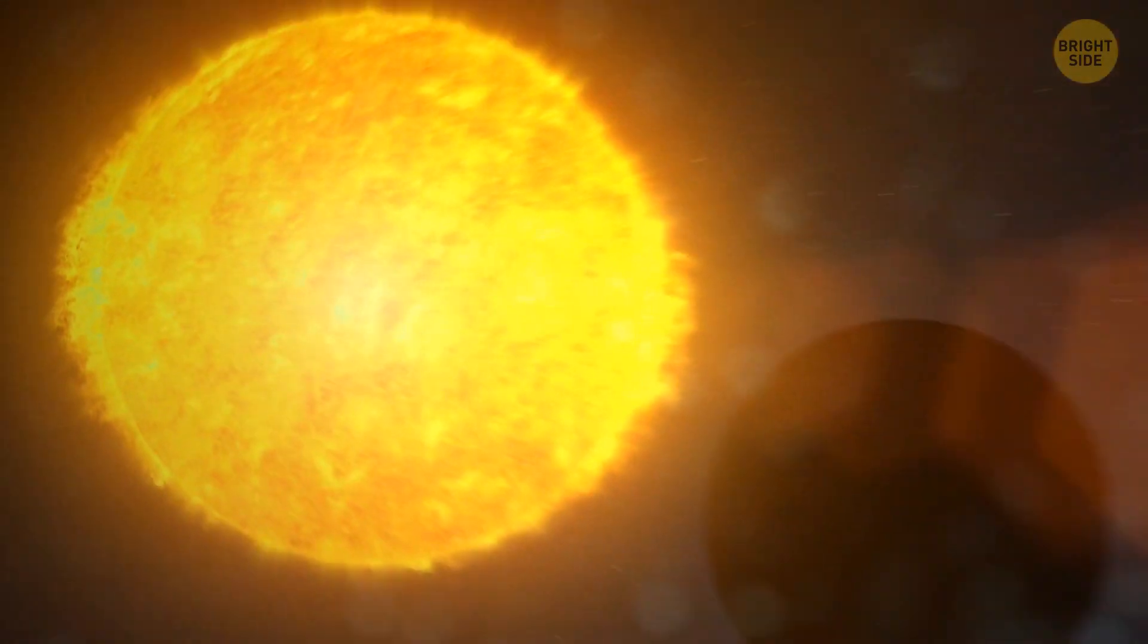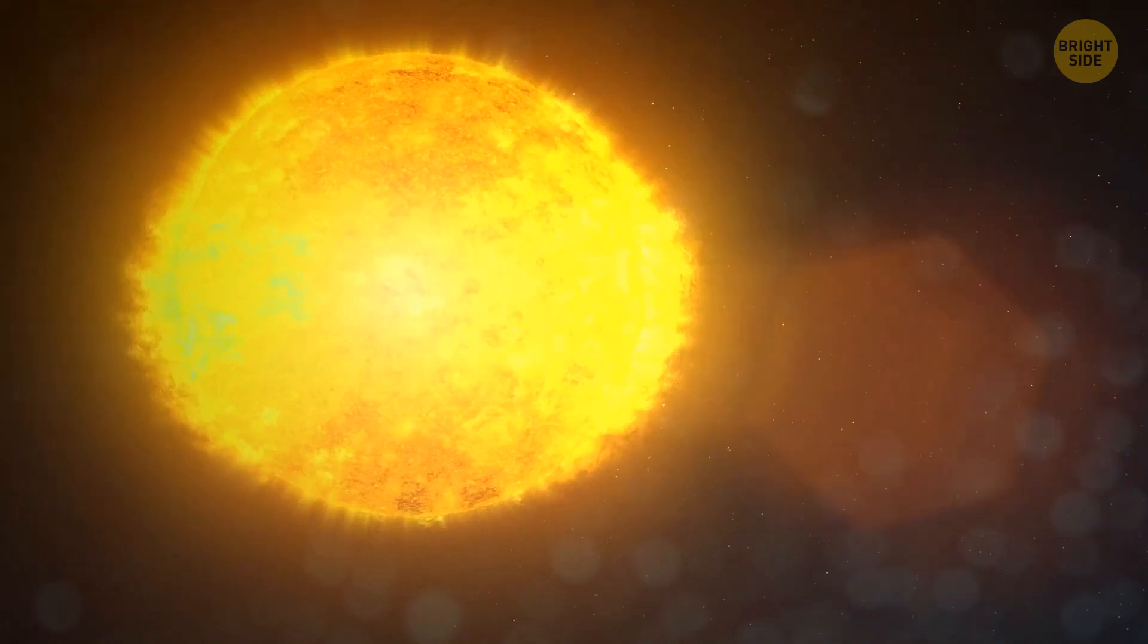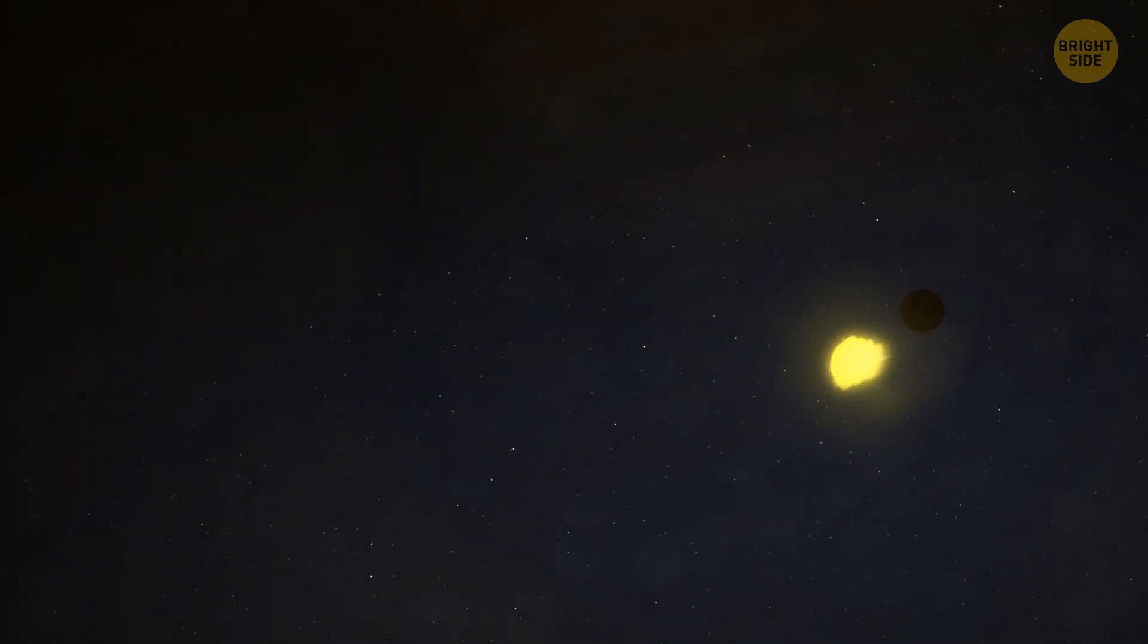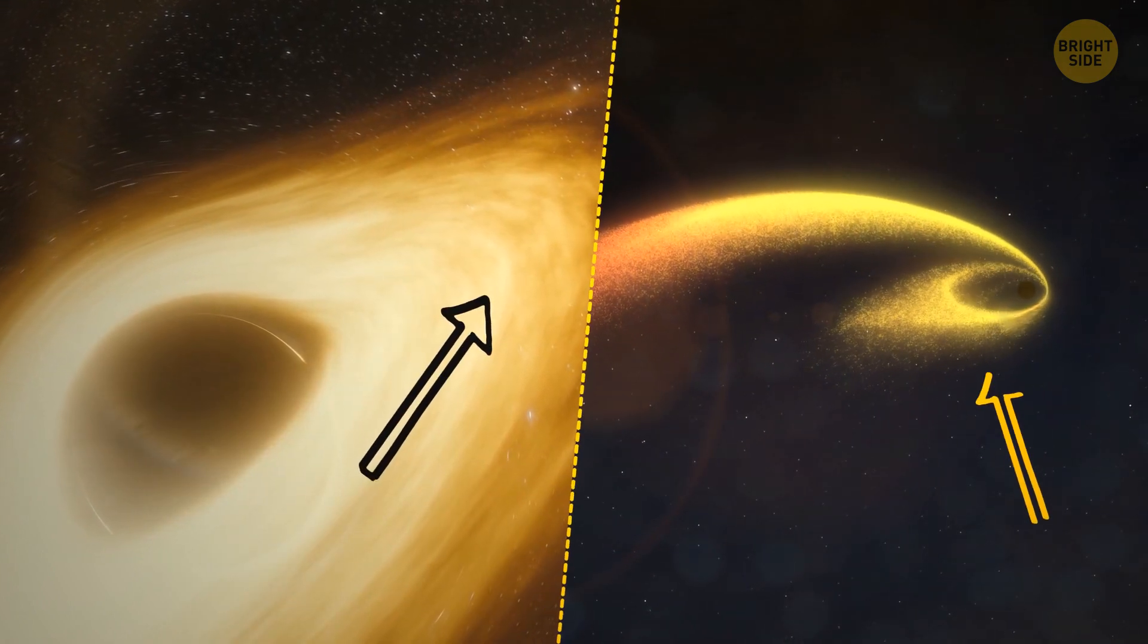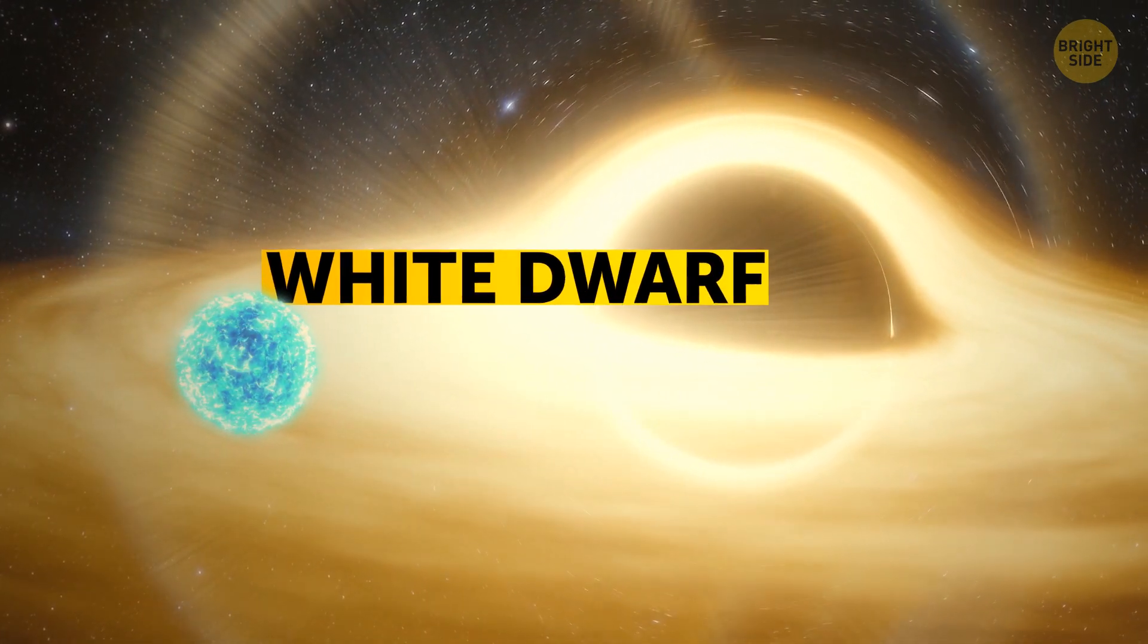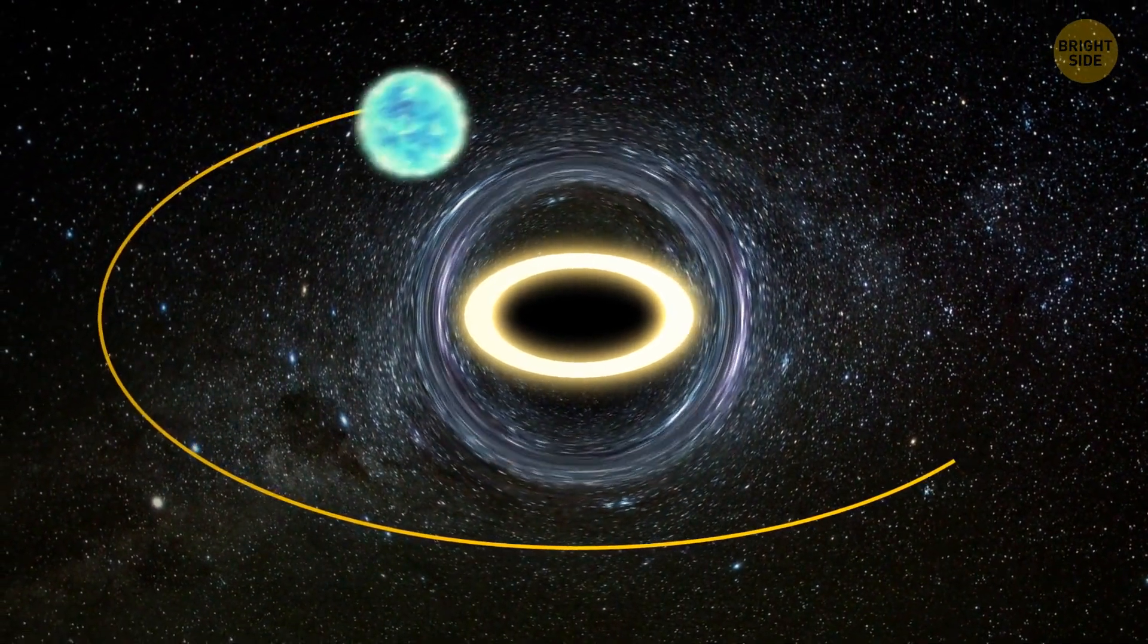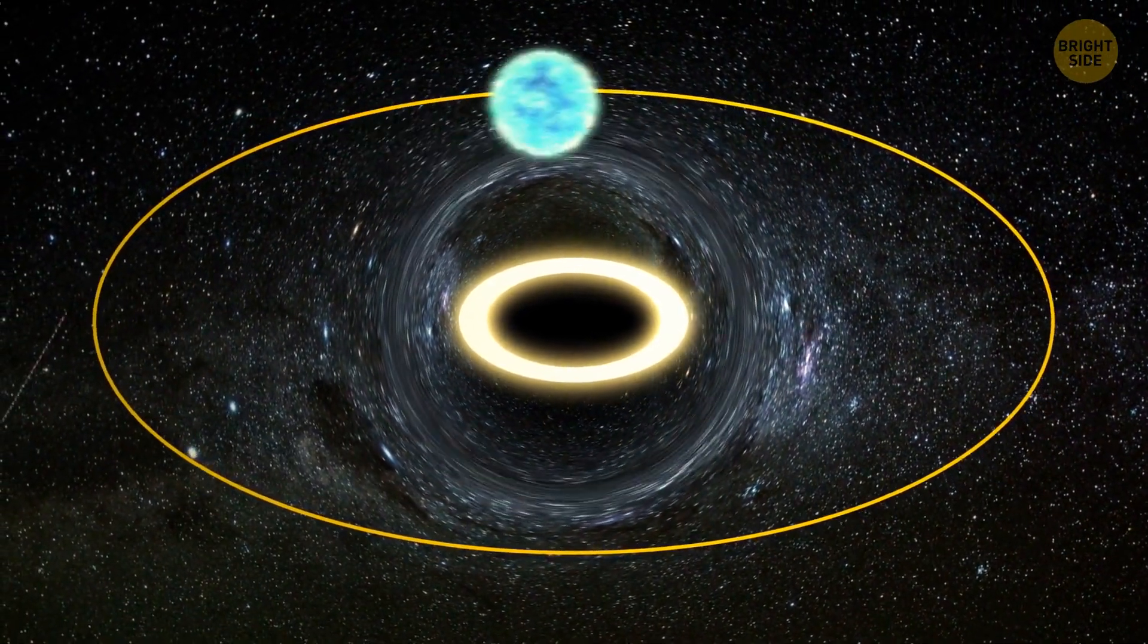The star was an average red giant when it met its new friend for the first time. When they got too close to each other, the hungry space monster couldn't resist the temptation and snacked on its guest. When it was done with the star's outer hydrogen layers, all that was left was the star's core. Eventually, the poor thing turned into a white dwarf. But for some reason, the giant space monster couldn't finish the meal and trapped it in its orbit for later instead.